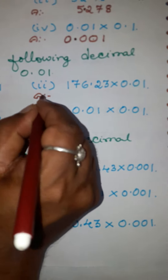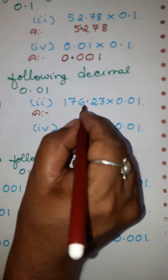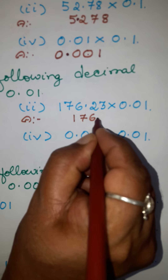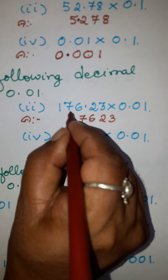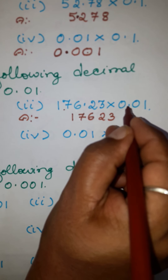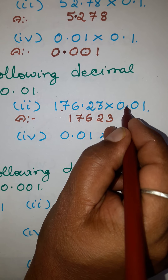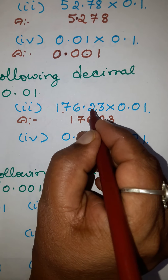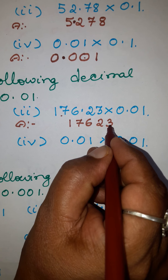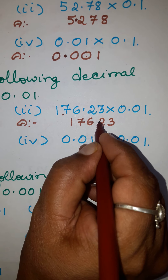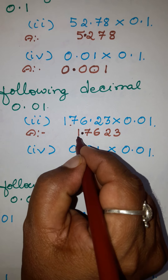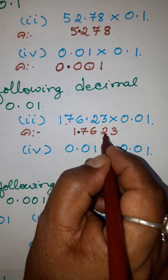Second example: ignoring the decimal point, write this number as 17623. In this number, after the decimal to the right there are two places. Here to the right of the decimal point there are also two places. Two plus two equals four. Move four places from right to left — one, two, three, four — and put the decimal point. The answer is 1.7623.